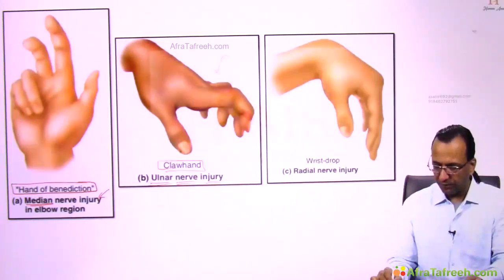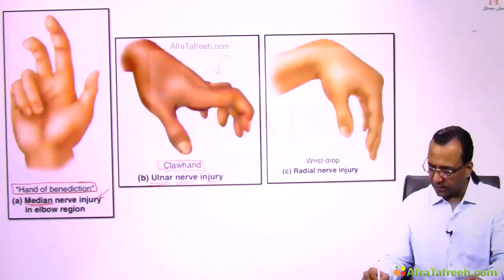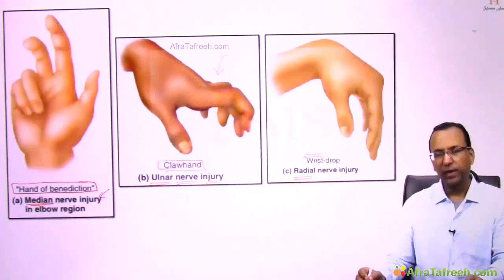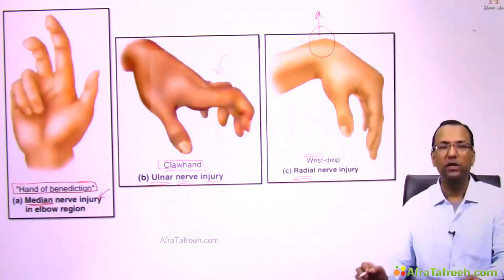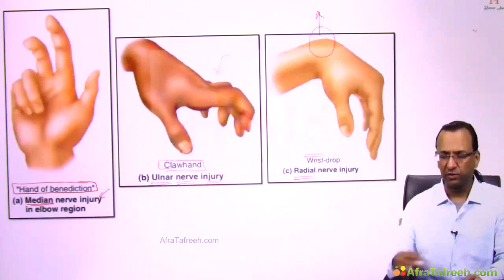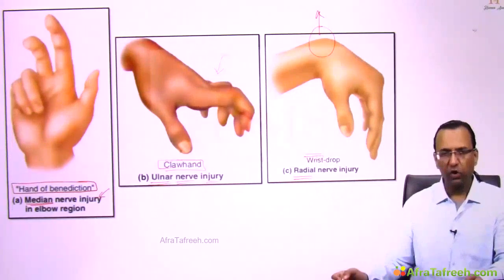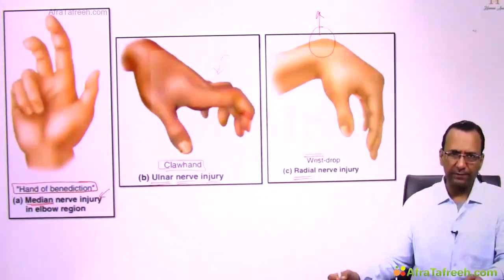And if you are talking about the radial nerve injury, then it is going to present as wrist drop — the inability to do wrist extension. So, a quick overview; details we have already seen earlier.